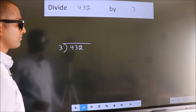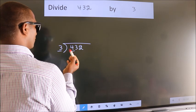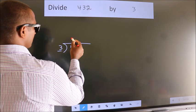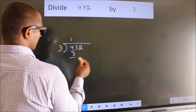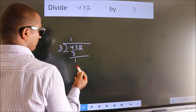Next, here we have 4, here 3. A number close to 4 in 3 table is 3 ones, 3. Now, we should subtract. We get 1.